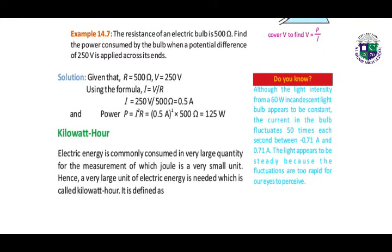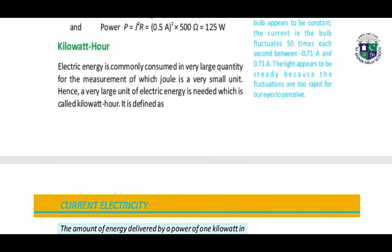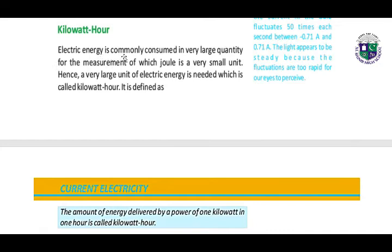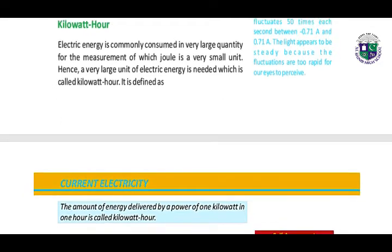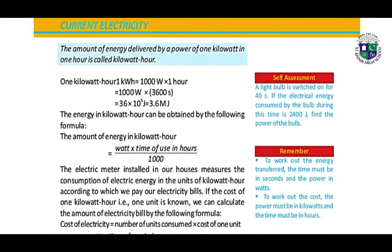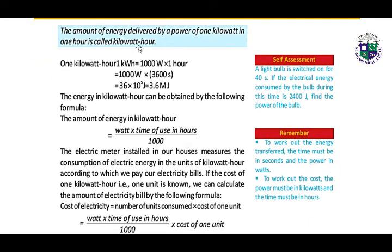Kilowatt-hour: electric energy is commonly consumed in very large quantities, for the measurement of which the joule is a very small unit. Hence, a very large unit of electric energy is needed, which is called the kilowatt-hour. It is defined as the amount of energy delivered by a power of 1 kilowatt in 1 hour. 1 kilowatt-hour equals 1,000 watts × 1 hour. By calculating these values, we get 3.6 megajoules.